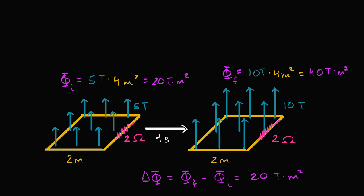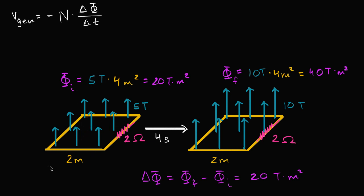The voltage induced — the voltage that's going to induce a current — if you look up Faraday's Law, you would see something like this: voltage generated is equal to negative n times our change in flux over change in time. We're assuming the rate of change is constant, so we have the average rate of change of flux multiplied by n. n is the number of loops you have — in this example n is just going to be one. We just have one loop, so that simplifies things.